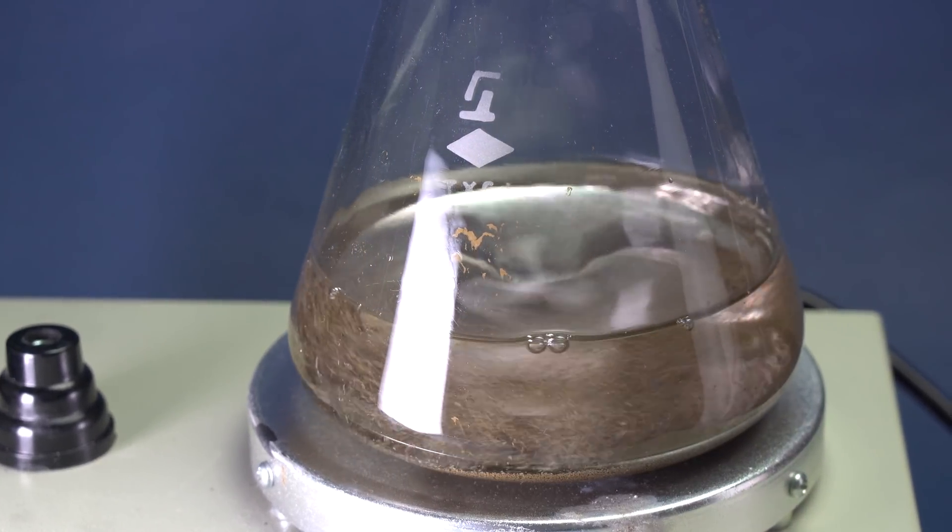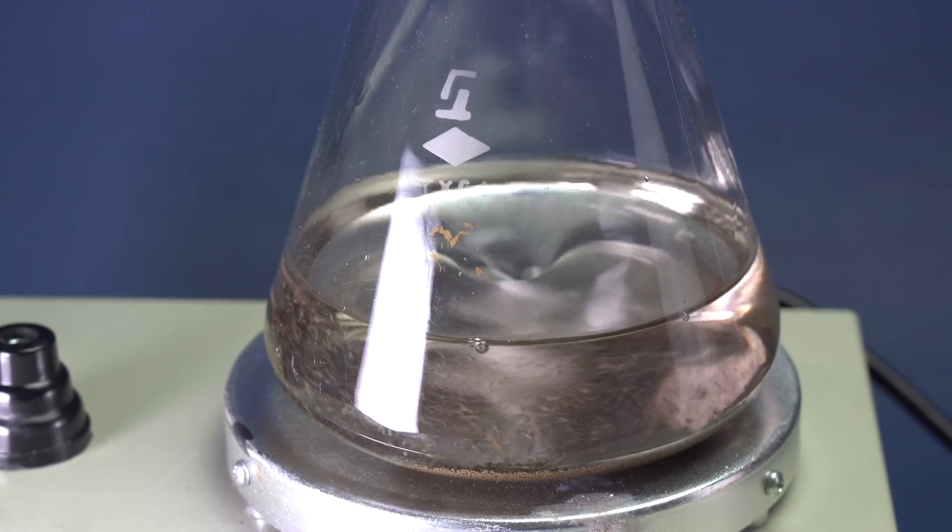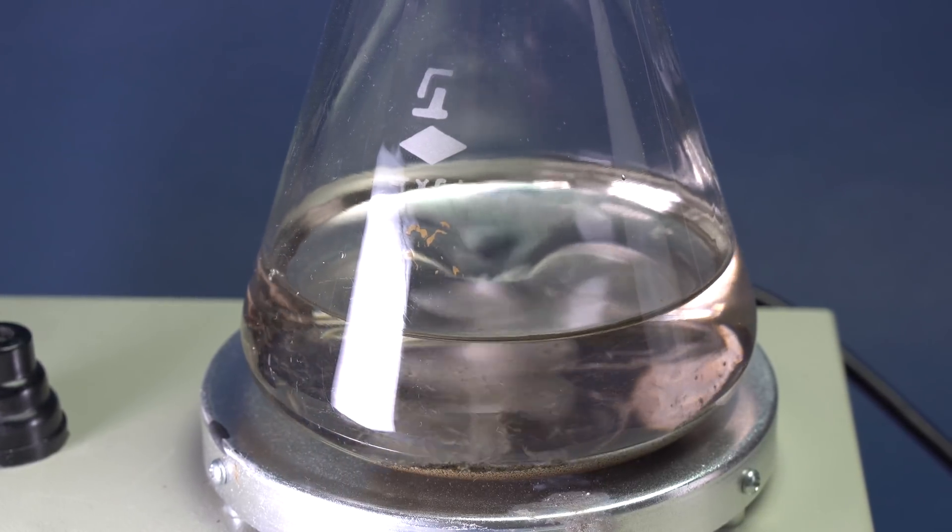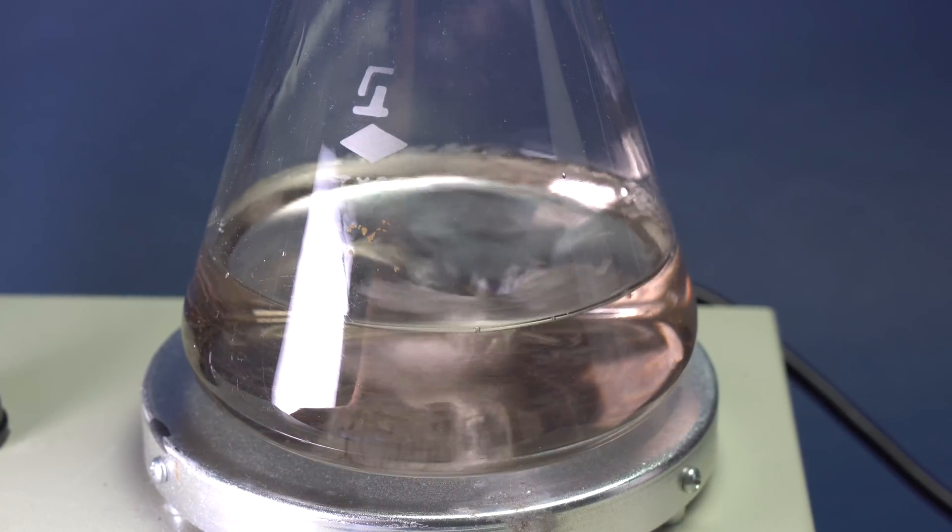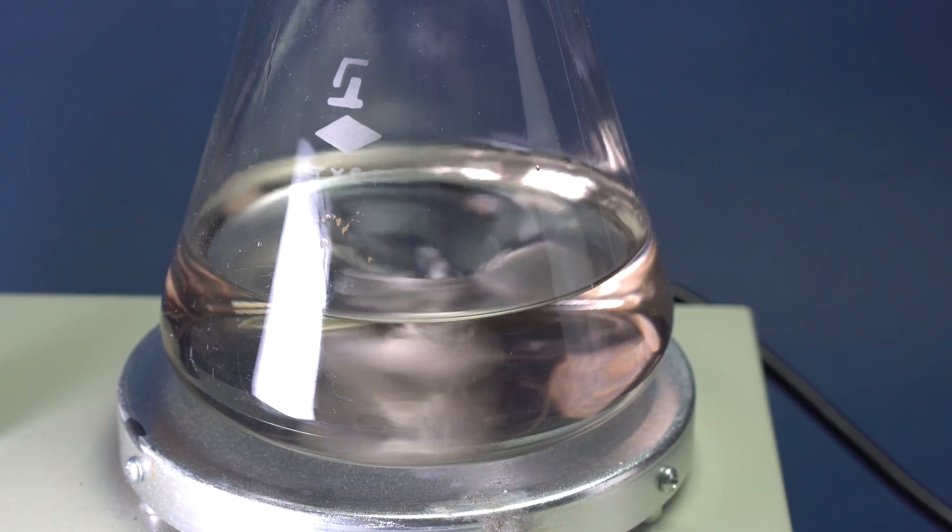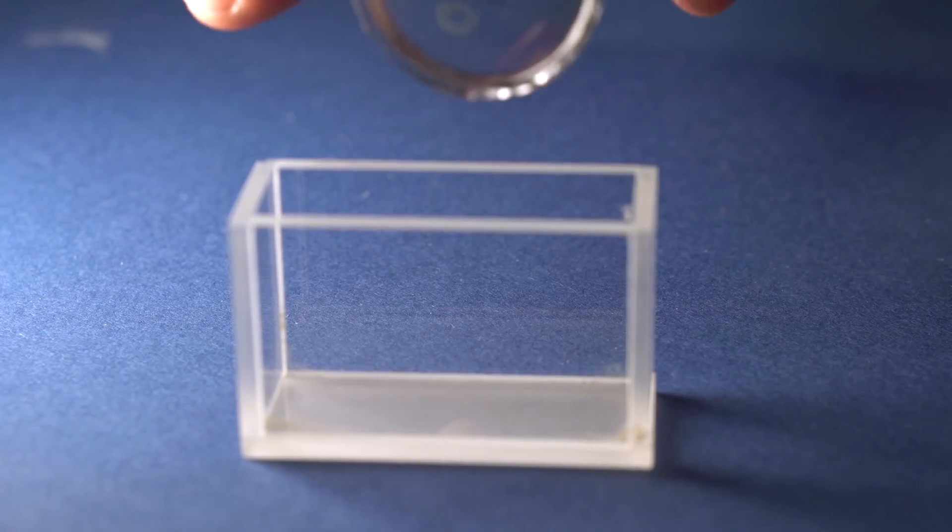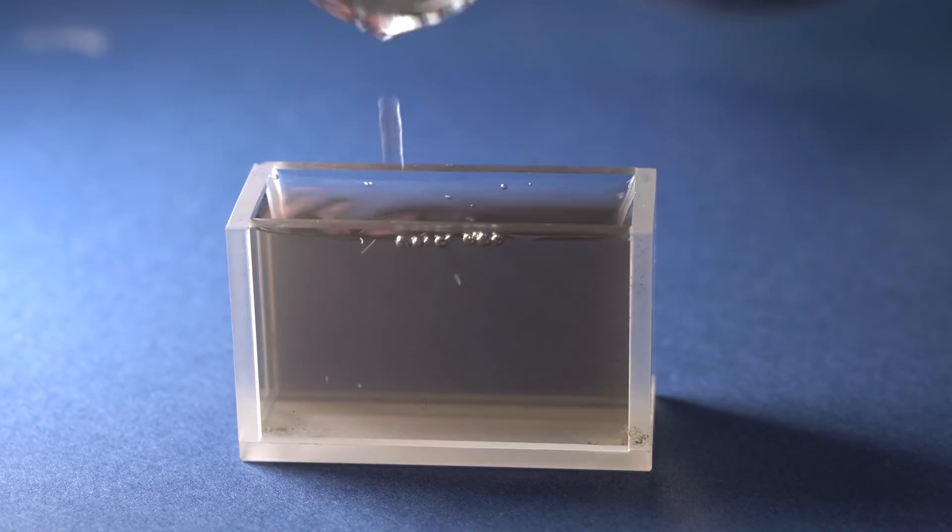There will form a transparent silver ammonia solution which needs to be used as soon as possible because of the explosive silver nitride forming in it. If we pour 2% glucose solution into the silver ammonia solution, there will start to form a real mirror in the container.